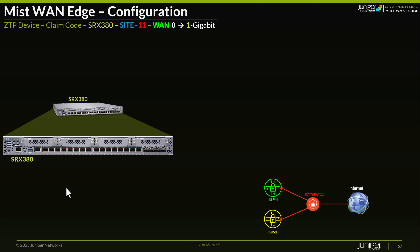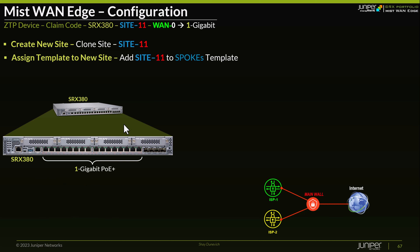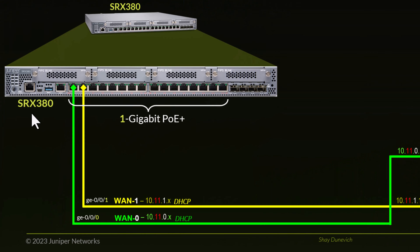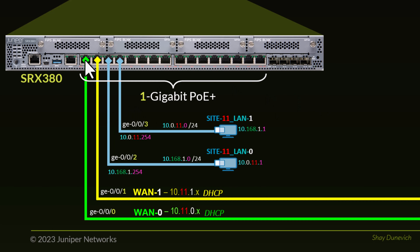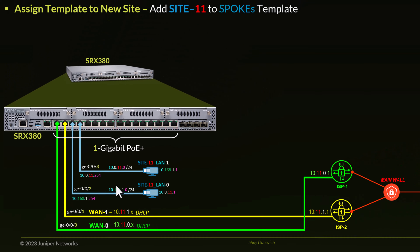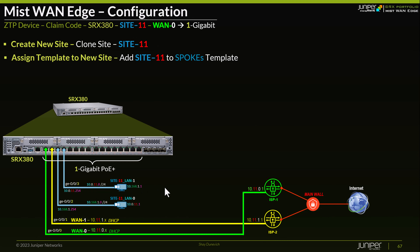Let's use site 11 to ZTP this SRX 380 using the 1-gigabit Ethernet interfaces. First we need to create site 11 — we'll clone site 3 or one of the existing sites to site 11, as we have previously done. Then we assign the spoke WAN Edge template named 'Spokes' to site 11 as well. We'll use the same config because the SRX 380 uses the same port configuration as the VSRXs: GE000 will be WAN 0, WAN 1 will be GE001, and LAN 0 and LAN 1 will be GE002 and GE003.